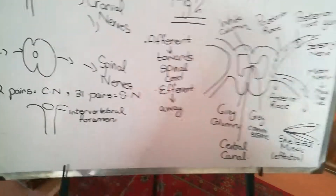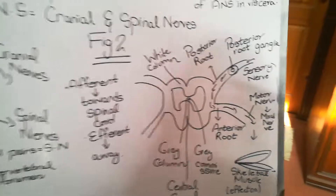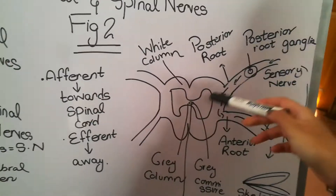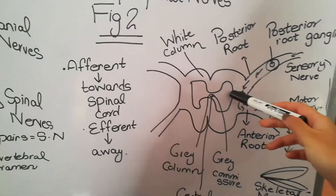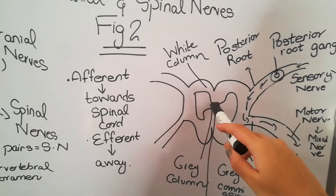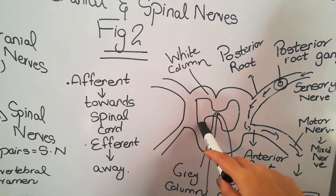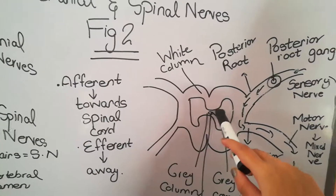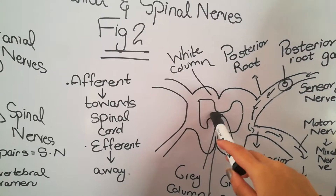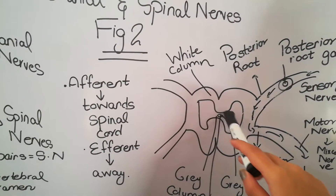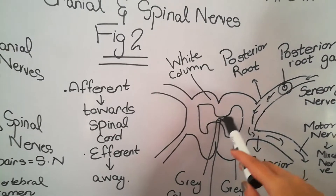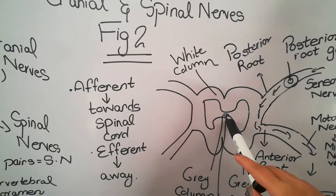Looking at this diagram, the gray matter of the spinal cord has an anterior horn, a posterior horn, and a gray commissure connecting the two sides of the gray matter. It also has a central canal.